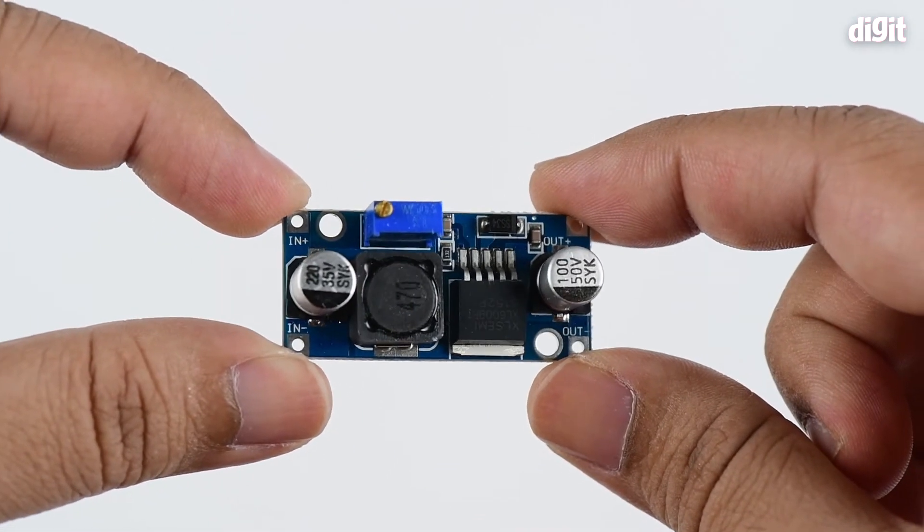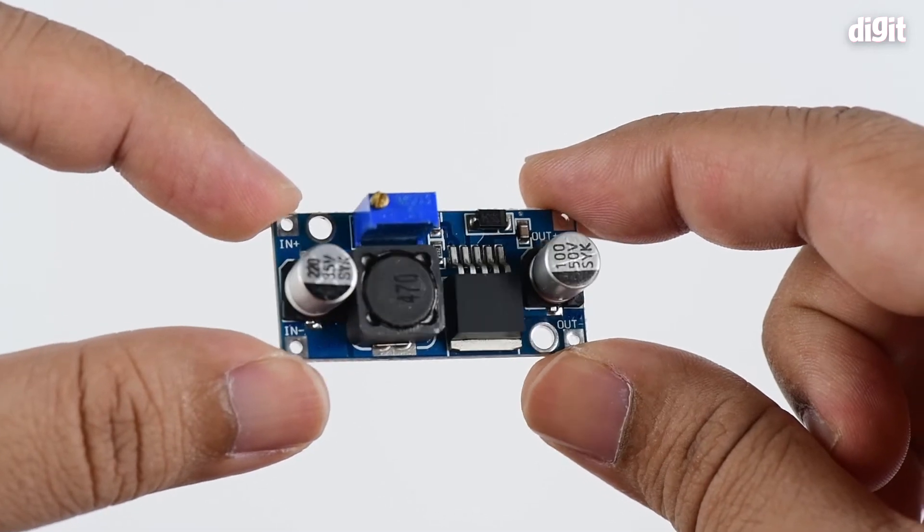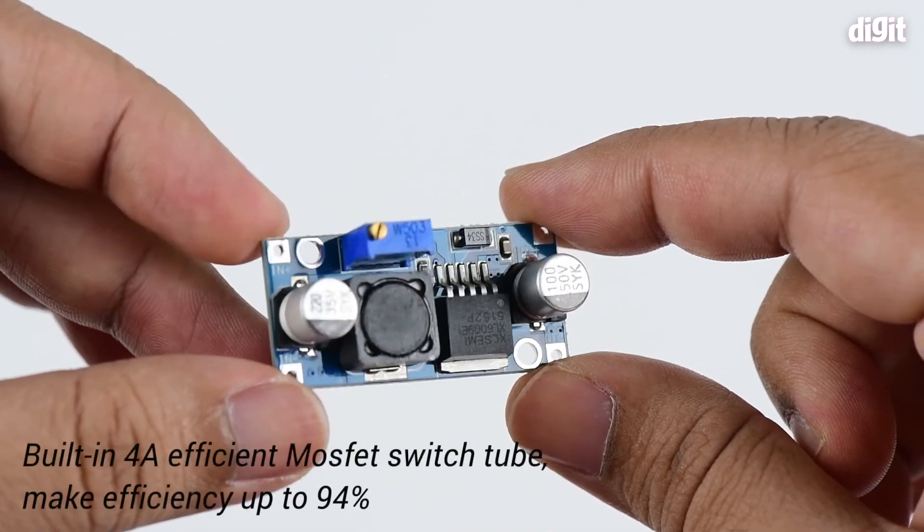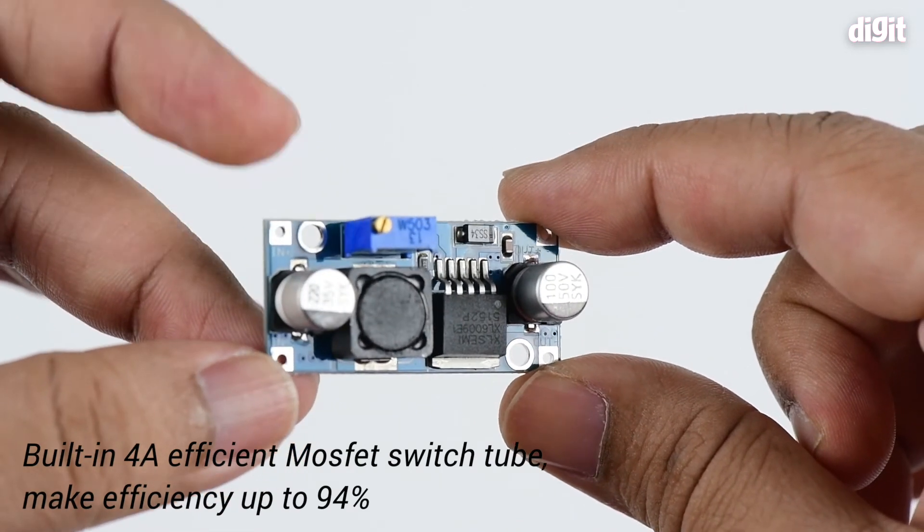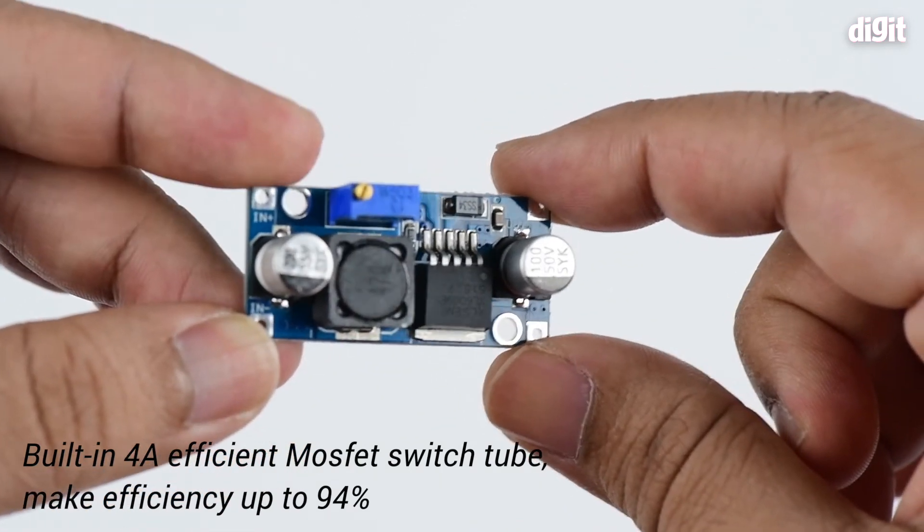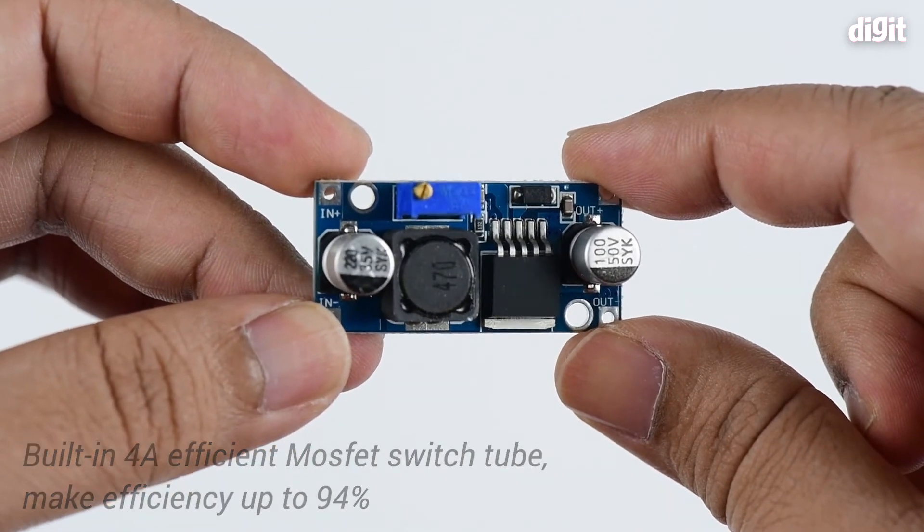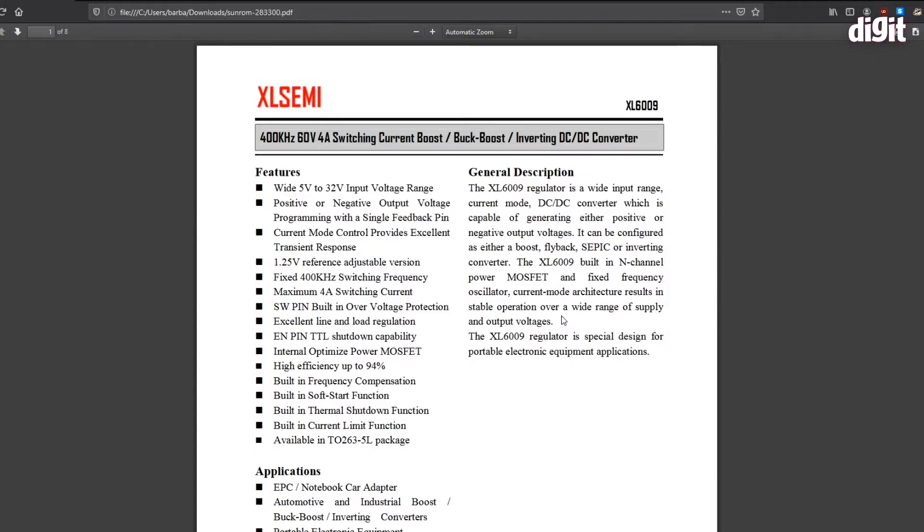You can always alter the potentiometer to reduce that as well. Switching regulators like the XL6009 have a high efficiency rating, about 94% in this case, but the overall circuit once designed could alter this efficiency. Looking at the spec sheet, we can see it has a wide input voltage of 5 volts to 32 volts and a maximum switching current of 4 amperes.